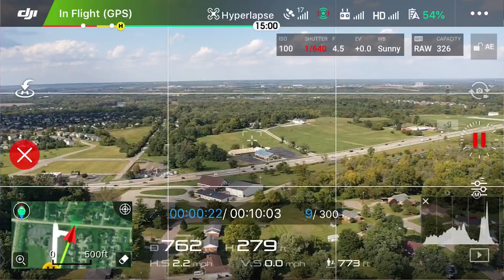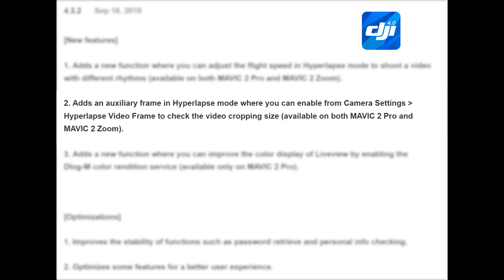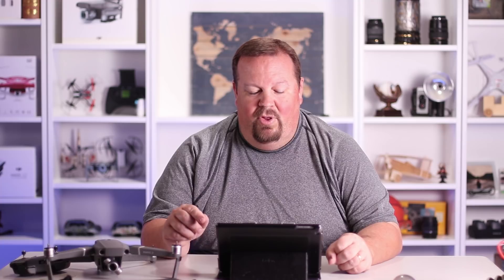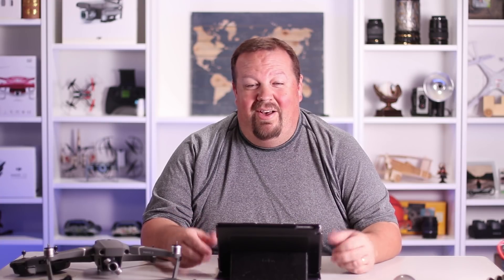It obviously didn't seem to work. The other modes — course lock, which I use a lot, and circle — I just couldn't change the speed setting either. If you figured it out, please leave me a comment below. Feature number two: adds an auxiliary frame in hyperlapse mode where you can enable from camera settings a hyperlapse video frame to check the video cropping size, available on both Mavic 2 Pro and Mavic 2 Zoom.